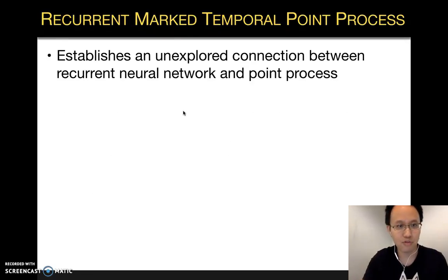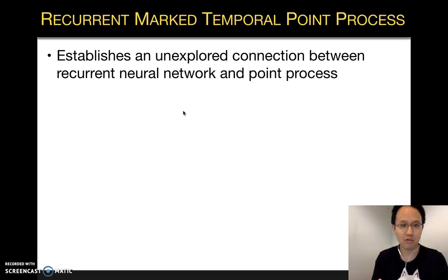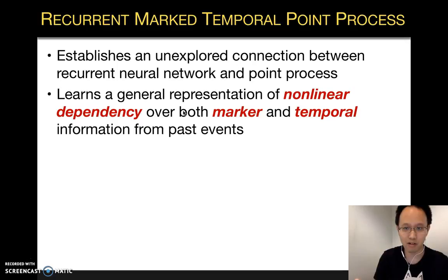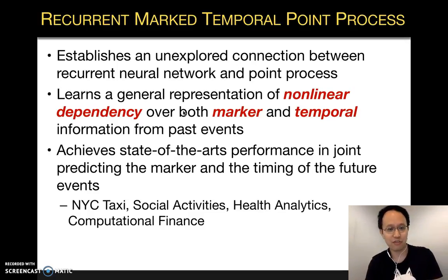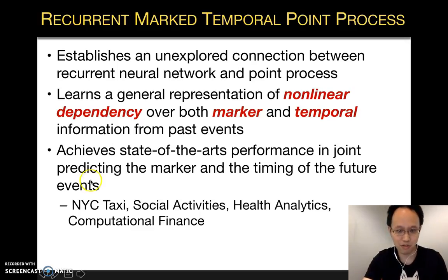To address these issues, in our paper we propose the Recurrent Marked Temporal Point Process, which establishes an unexplored connection between the recurrent neural network and the point process. It learns a general representation of non-linear dependency over both the marker and the temporal information from past events, and achieves state-of-the-art performance in jointly predicting both the marker and the timing information of future events from four different domains.